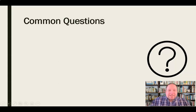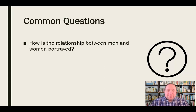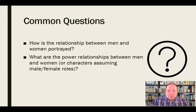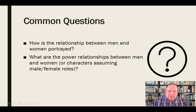Some common questions in feminist criticism: How is the relationship between men and women portrayed? How does this artifact — this book, this piece of music, whatever it is — indicate what kind of relationship men and women have? What are the power relationships between men and women, or are characters assuming male or female roles? Who clearly has the power in this particular relationship, and how is that represented in the work?